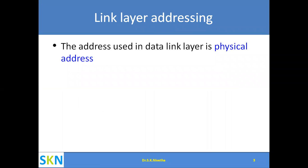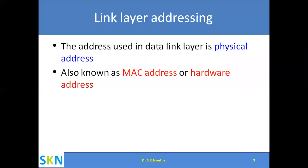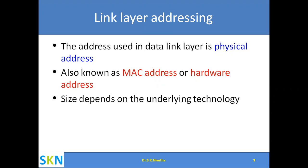Link layer address is also known as physical address, used in the data link layer of the TCP/IP architecture. It is also known as MAC address or hardware address — all these represent the same thing. The size of the address depends on the underlying technology. For example, if Ethernet is used, a 48-bit MAC address scheme is used.